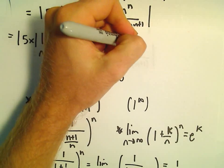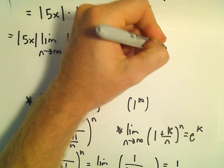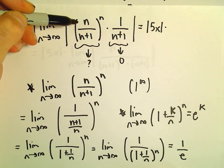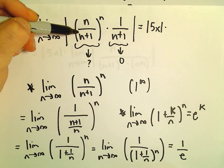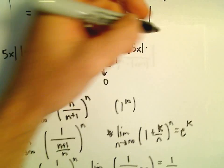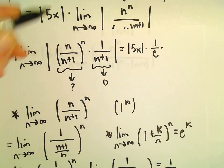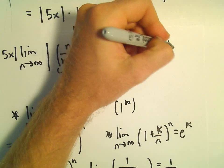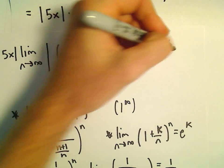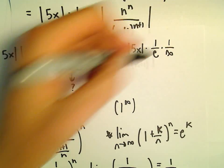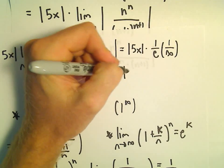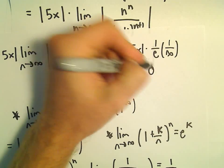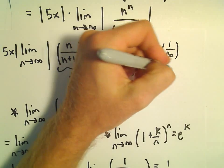Perfect. So it says we really have the absolute value of 5x times, again, we said the limit as n over n plus 1 raised to the n, that's going to equal 1 over e. But then the second limit, that's going to approach, well, it's going to get arbitrarily large, which means that the whole limit is going to approach 0.